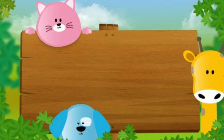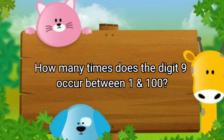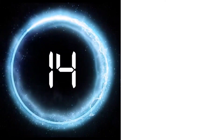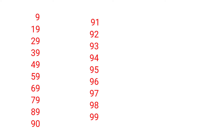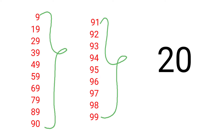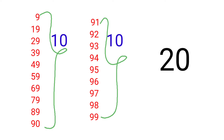Riddle No. 1: How many times does the digit 9 occur between 1 and 100? The answer is: there are totally 20 nines between 1 and 100. The digit 9 appears 20 times in that range.